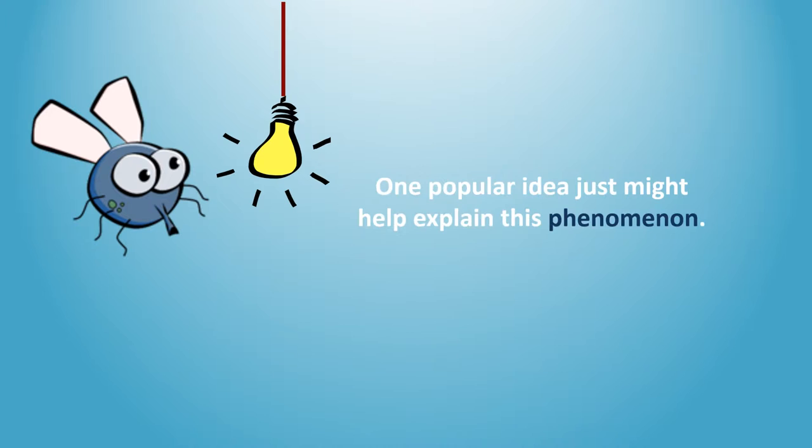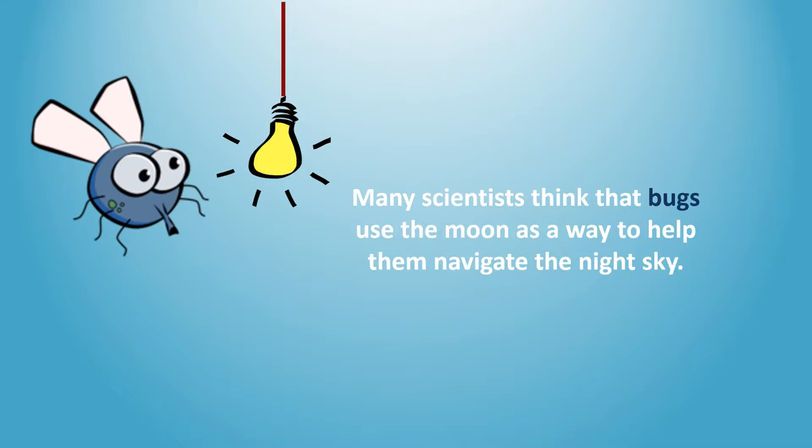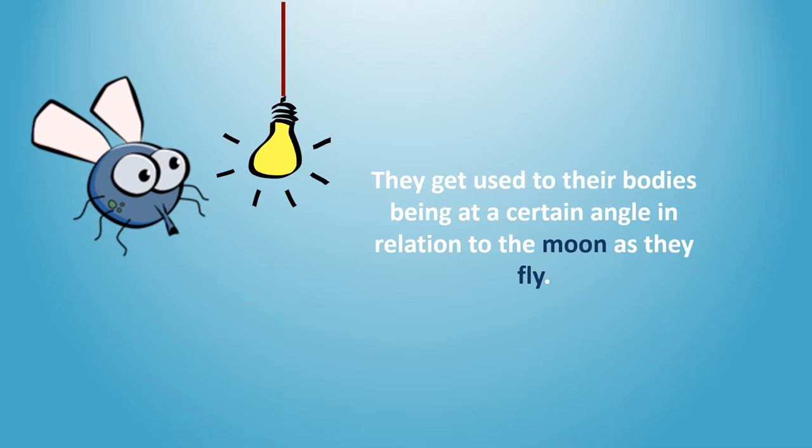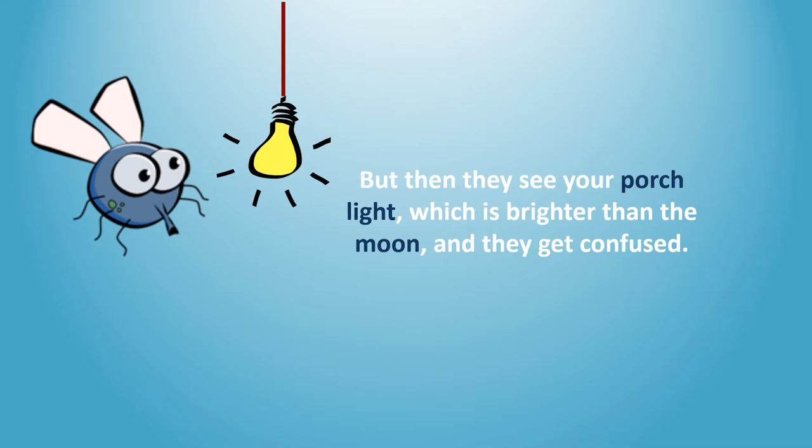Many scientists think that bugs use the moon as a way to help them navigate the night sky. They get used to their bodies being at a certain angle in relation to the moon as they fly. But then they see your porch light, which is brighter than the moon, and they get confused.